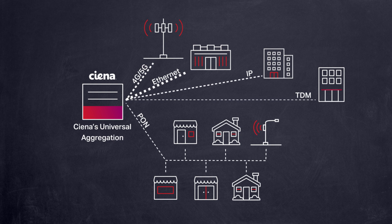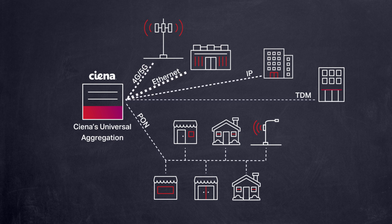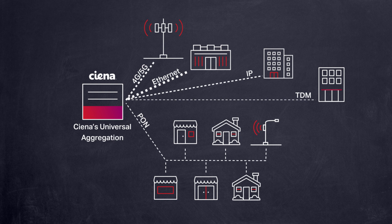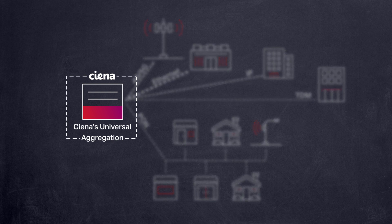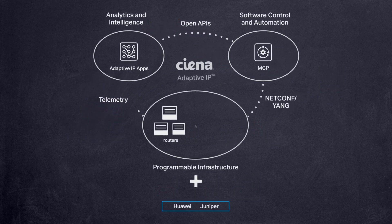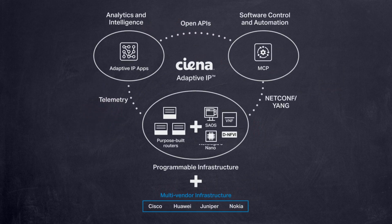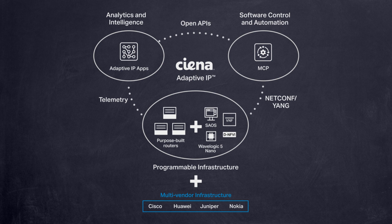Sienna's universal aggregation solution can do just that, providing exactly what you need, where you need it, on one of our many cost-effective routing and switching platforms. All the while delivering a simpler approach to reimagine your IP networks with our automated, open, and lean adaptive IP to reduce the complexity of legacy IP MPLS network designs.